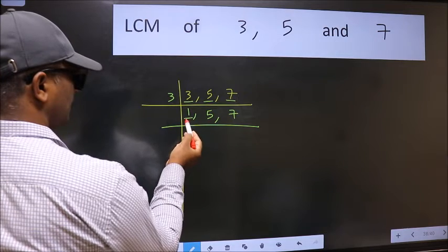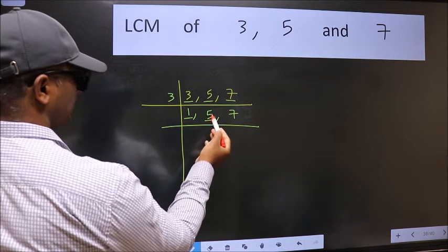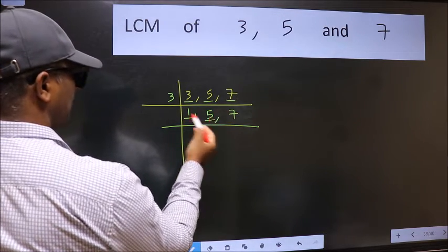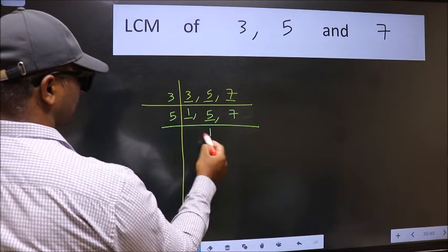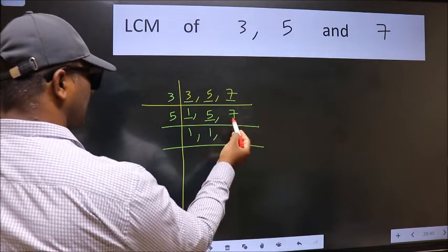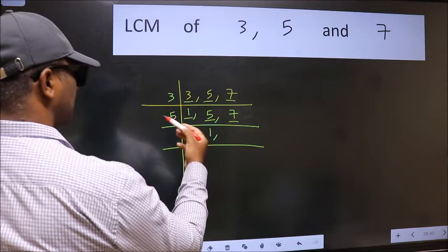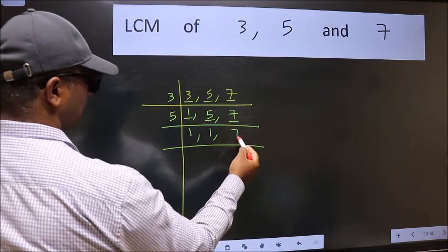Now we got 1 here so focus on the next number 5. 5 is a prime number so 5 goes into 5 once. The other number 7 is not divisible by 5 so we write it down as it is.